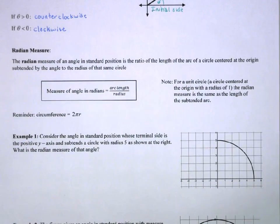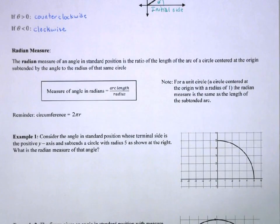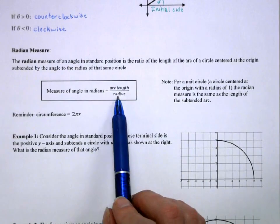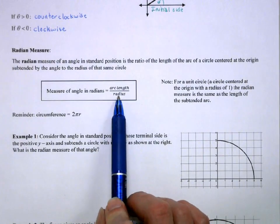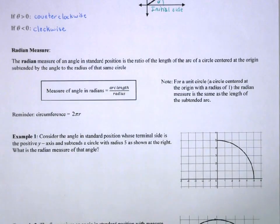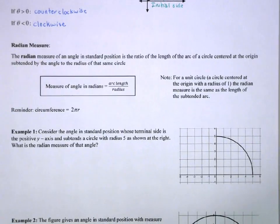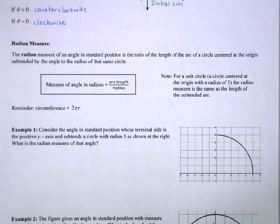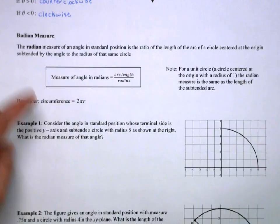Now, we have a special case, which we will be dealing with frequently, and that's if we have a unit circle. A unit circle is a circle centered at the origin with a radius of 1. Well, if I have a radius of 1, we'd be dividing by 1. So, on a unit circle, whatever the angle is, is equal to the arc length. As a reminder, a circumference is 2πr.